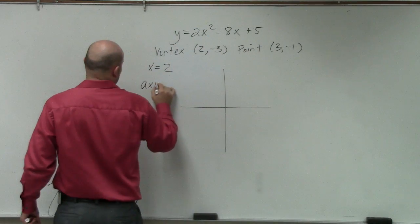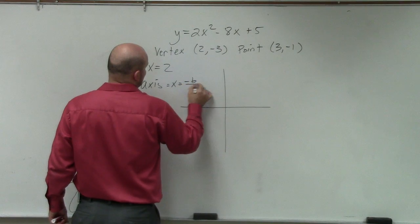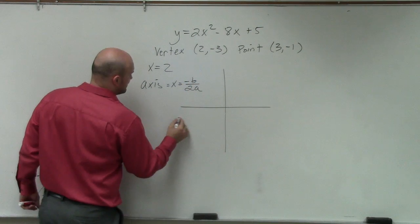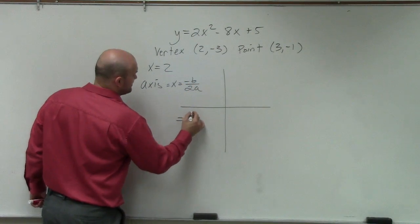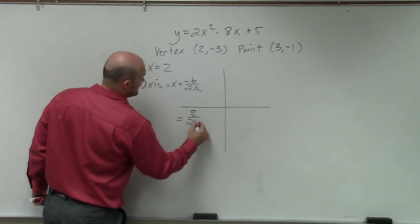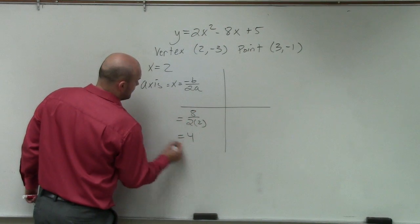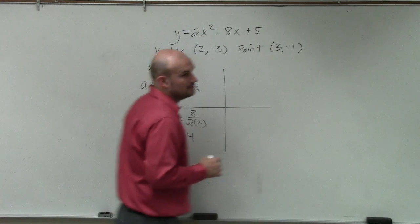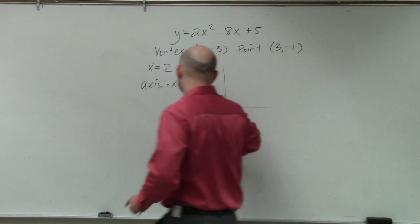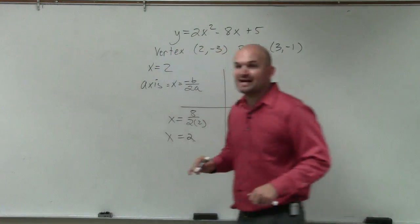Hopefully. Axis of symmetry is x equals opposite of b divided by 2 times a. OK. So in my example, it was opposite of b, which is positive 8, divided by 2 times 2, which equals 4. Equals 2. Thank you. So x equals 2.